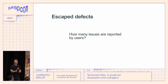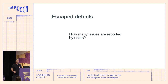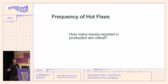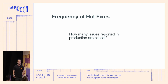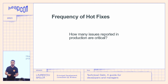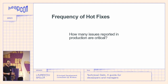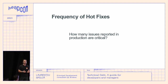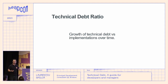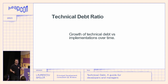Another metric is frequency of hot fixes — out of those user-reported issues, how many woke you up at 3 a.m. requiring immediate resolution? The closer the software is to a point of no return, the more hot fixes you have. And remember: even with Kubernetes, a restart doesn't always solve the problem. Sometimes it's actually a bug in the code that can't be fixed with a restart.